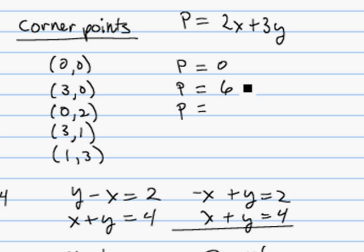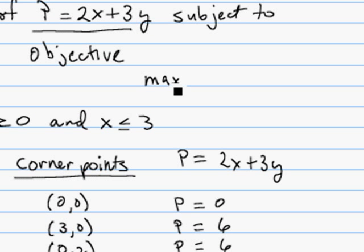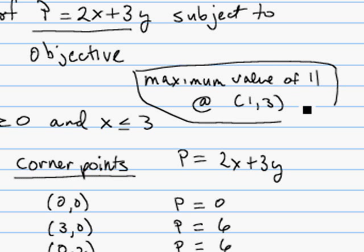The fourth corner point, we're going to get 6 plus 3, which is 9. And the last corner point, ordered pair 1, 3, is going to be the value of 11, because we get 2 plus 9, which is 11. So here, we can say we have a maximum value of 11 at the ordered pair 1, 3. And that's our solution to this linear programming problem.